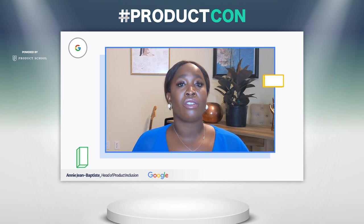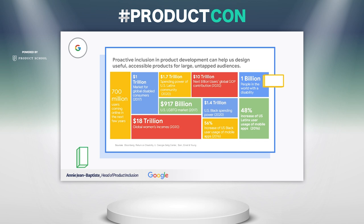One thing that's also unique about product inclusion is that we balance the business and the human case. There's a misconception that underrepresented groups don't have power. But there are one billion people in the world with a disability, U.S. Black consumers have $1.4 trillion in purchasing power, and we're seeing record growth with mobile app usage and users coming online from places like Nigeria. It's really important to understand that as a business grows, it's important to think about a diverse set of constituents.